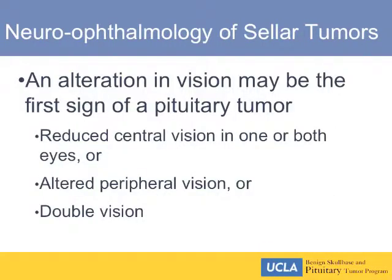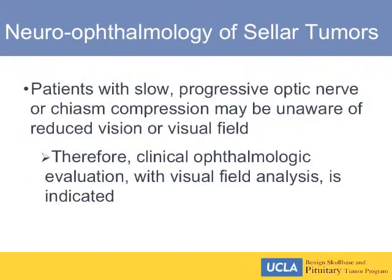In terms of thinking about vision, altered vision is often the first sign of a pituitary tumor, either reduced central vision in one or both eyes, altered peripheral vision, or double vision. And patients with slow progressive optic nerve or chiasm compression may be unaware of reduced vision or visual field loss.